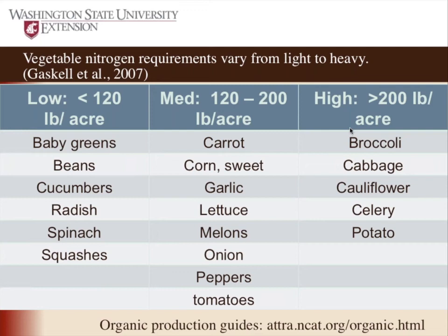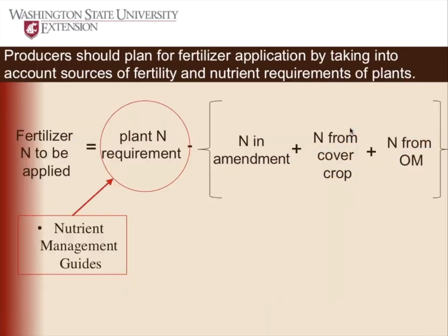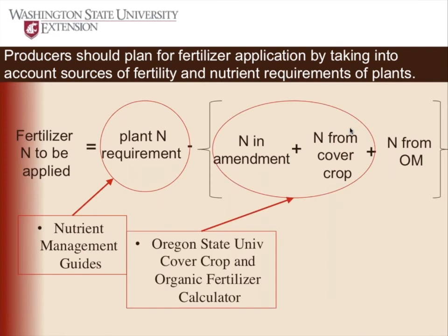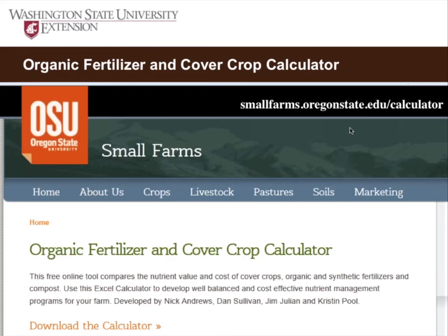Oregon State's cover crop and organic fertilizer calculator is a great tool, and it's been expanded to work in environments like Idaho. It looks at the contribution from amendments and other organic fertilizers, because not all the nitrogen in organic fertilizer is going to be available. This tool is really helpful at estimating how much will be available in the year of application — for example, how much nitrogen you'll actually get from a vetch cover crop.